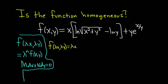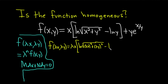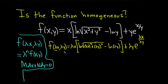This gives us lambda x times the natural log of the square root of lambda x squared plus lambda y squared, minus the natural log of lambda y, plus lambda y times e to the lambda x over lambda y. We're just going through and replacing every single x with lambda x and every single y with lambda y.